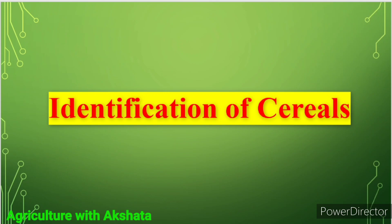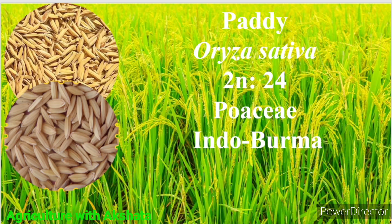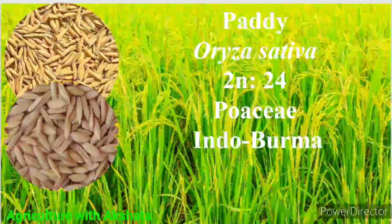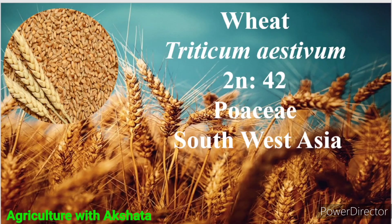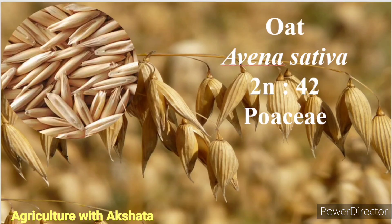First we will identify some important cereals. The first one is Paddy; scientific name Oryza sativa, 2n = 24, family Poaceae, origin Indo-Burma region. Wheat: Triticum aestivum, 2n = 42, Poaceae family, origin Southwest Asia. Barley: Hordeum vulgare, 2n = 14, Poaceae family, origin Abyssinia or Ethiopia.